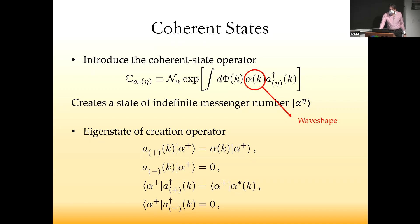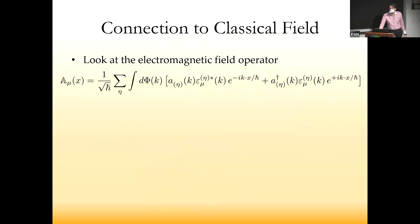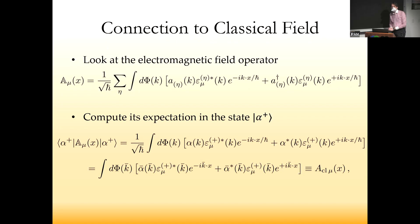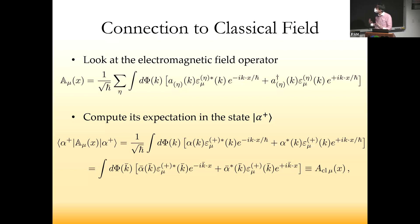What is the connection to the classical field? I'm going to do explicit examples from QED, but by double copying these equations you can do it for the gravitational field. We have an expression in terms of creation and annihilation operators with coefficients that are polarization vectors for the electromagnetic field operator. Let's see what happens if we compute its expectation value in the coherent state. Because of the properties of the state, it trades the operators for wave shapes and their complex conjugate.